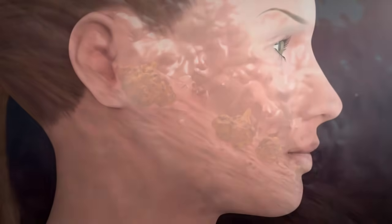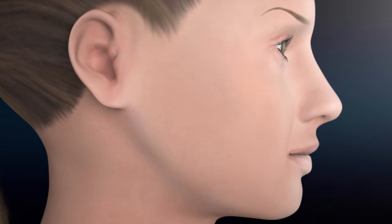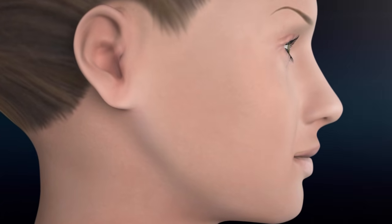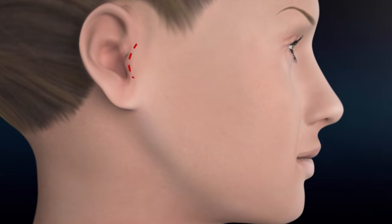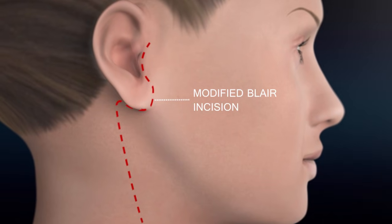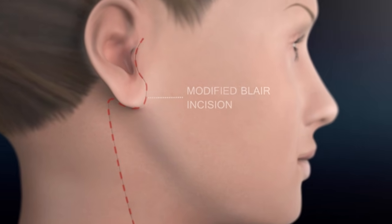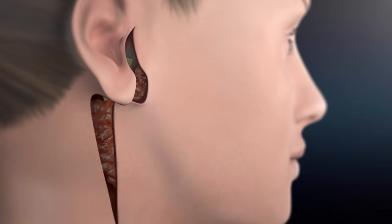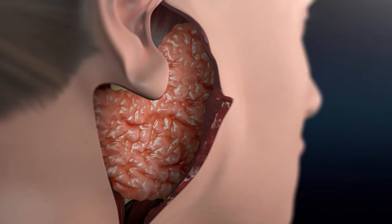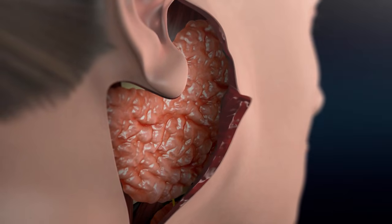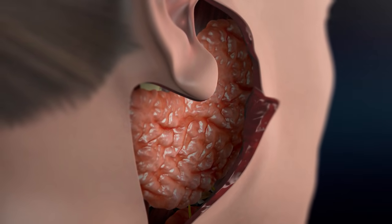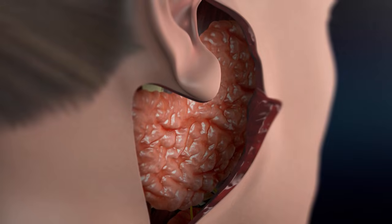The traditional parotidectomy incision, which is called a modified Blair incision, goes from in front of the ear, underneath the earlobe, and down into the neck. This surgical approach does give wide access to the gland, and for the less experienced surgeon, it is very important to use this type of incision to have greater visualization.